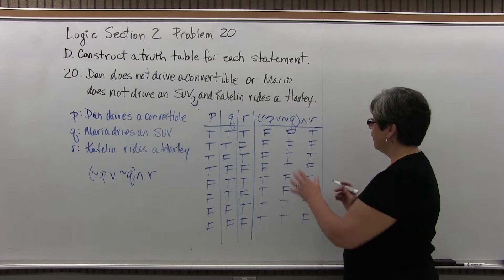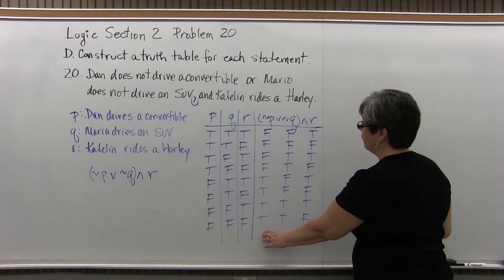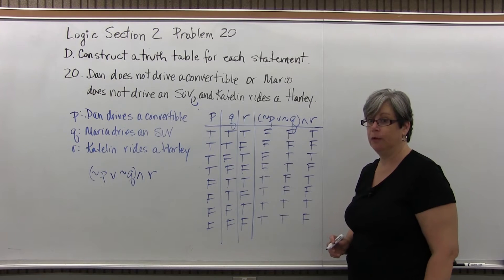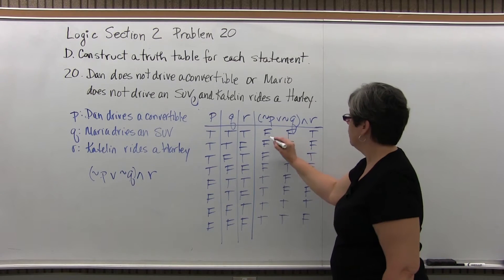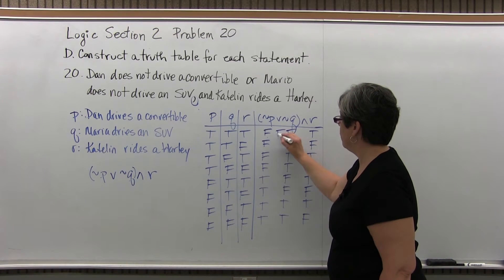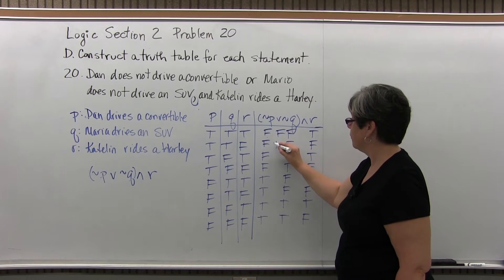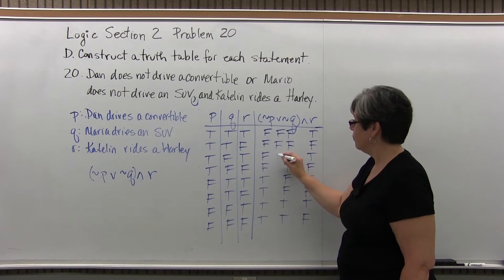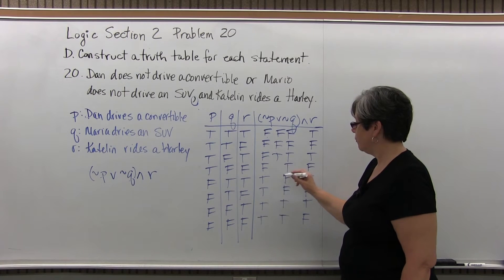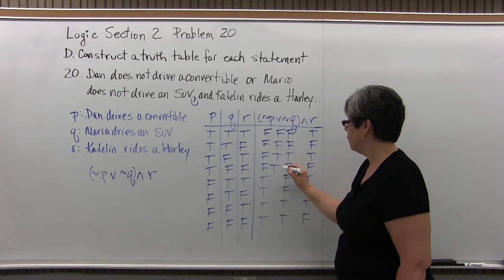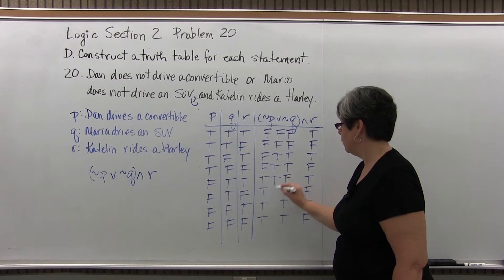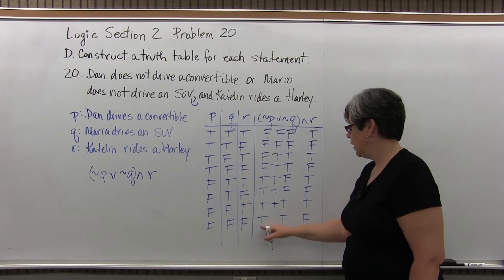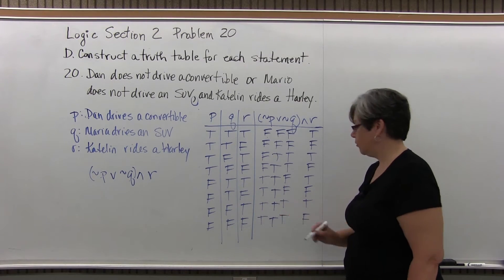Now for our operators. Inside the parentheses we do first, and that is an OR statement — it'll be true if either one is true. False or false is false; false or false is false; false or true is true; false or true is true; true or false is true; true or false is true; true or true is true; true or true is true.